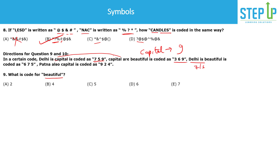The only word common to both sentences is 'capital,' and the only number common to both coded sets is 9 — so capital = 9. Then in 'Delhi is beautiful,' capital is absent, so the codes are for Delhi, is, and beautiful. Delhi and is use 7 and 5 (in some order), and the remaining code is 6 — so beautiful = 6.